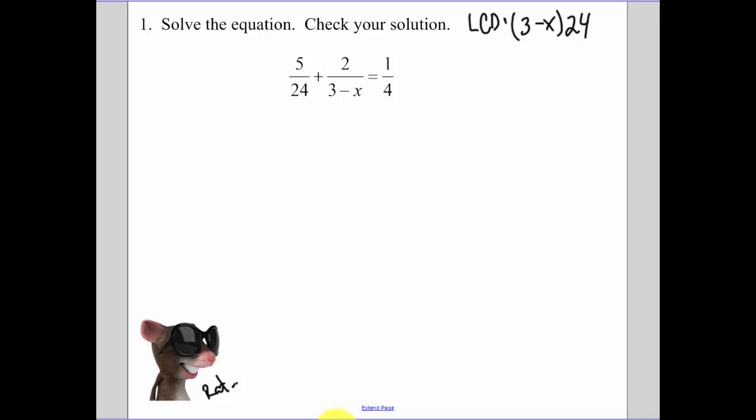You're going to take and multiply each one of those terms by 3 minus x times 24. This whole thing gets distributed to all the terms, meaning that when you have 5 over 24 and I distribute 24 times 3 minus x to it, things are going to cancel.